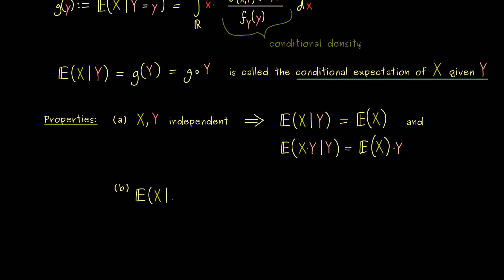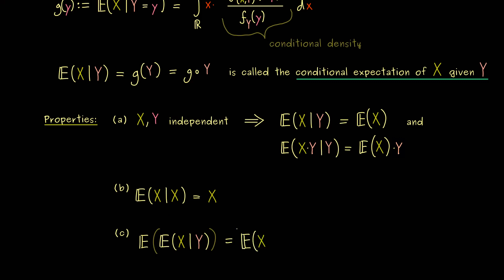Another property: what is E[X|X]? Since we already know X, this does not change anything — we simply get back the random variable X. Perhaps more interesting is taking the ordinary expectation of the conditional expectation: E[E[X|Y]] = E[X]. This means averaging all conditional expectations recovers the ordinary average. This is related to the law of total probability, and accordingly it's called the law of total expectation.